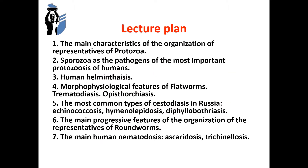Lecture plan: The main characteristics of the organization of representatives of protozoa. Sporozoa as the pathogens of the most important protozoosis of humans. Human helminthasis, morphophysiological features of flatworms, opisthorchiasis. The most common types of cestoidosis, for example, echinococcosis and diphyllobothriasis. The main progressive features of the organization of representatives of roundworms, and the main human nematodosis.